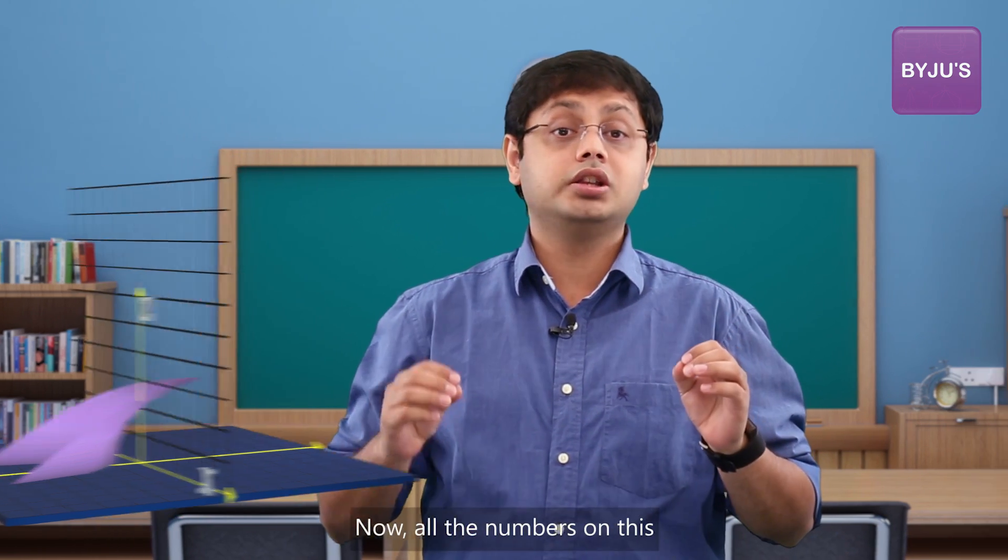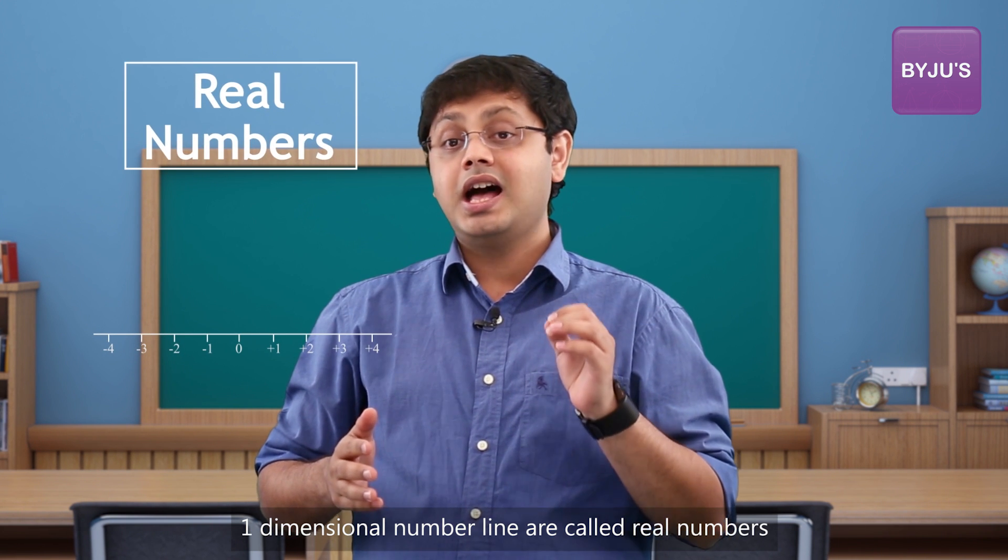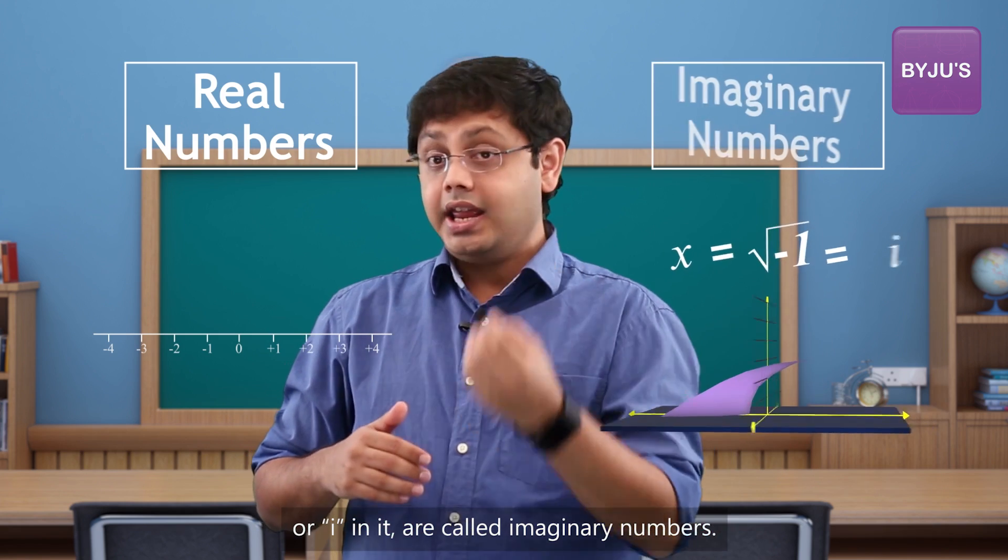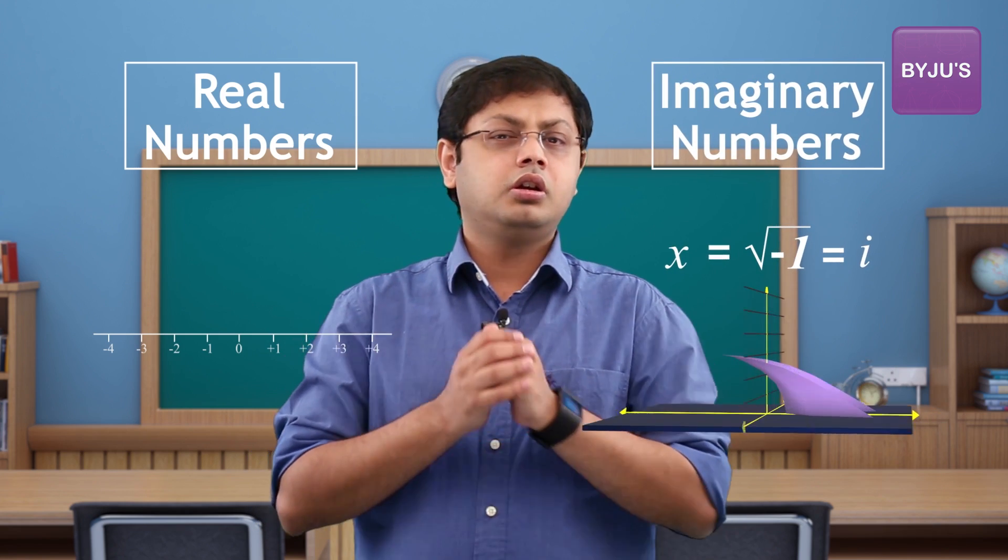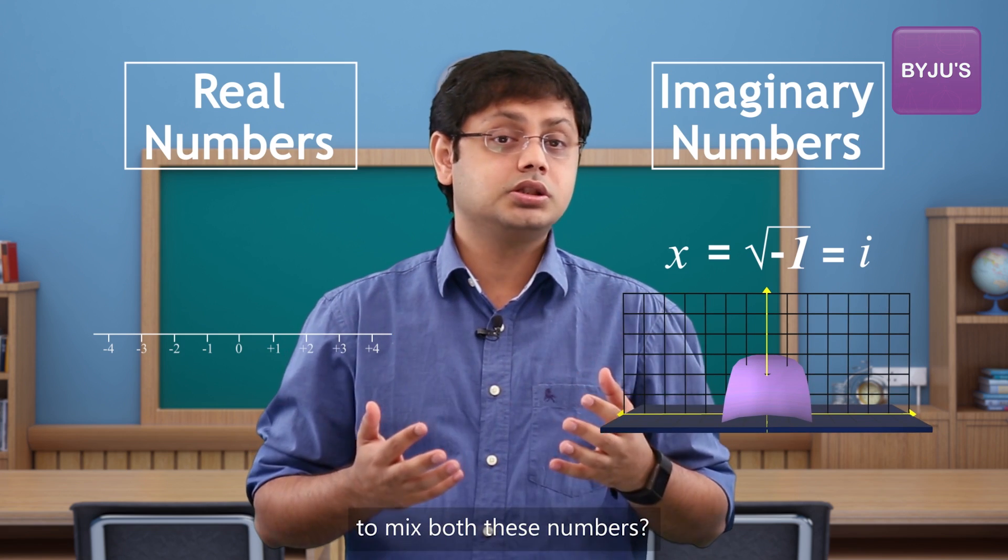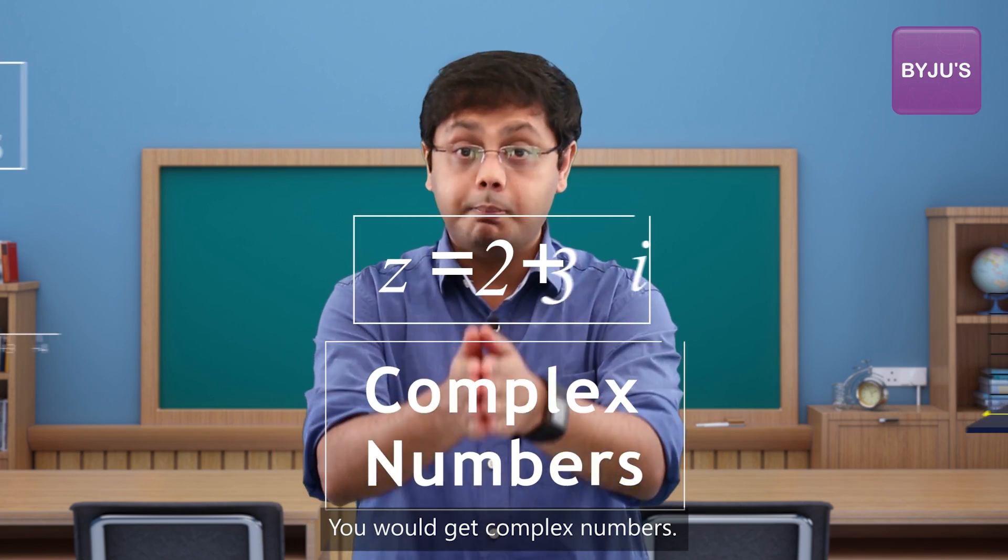Now all the numbers on this one-dimensional number line are called real numbers, and the numbers that have root of minus one as a factor, or i in it, are called imaginary numbers. Now what would happen if you were to mix both these numbers? You would get complex numbers.